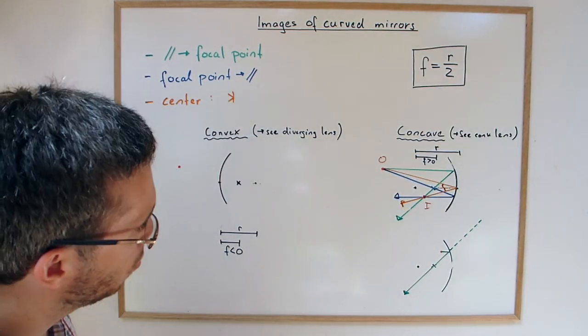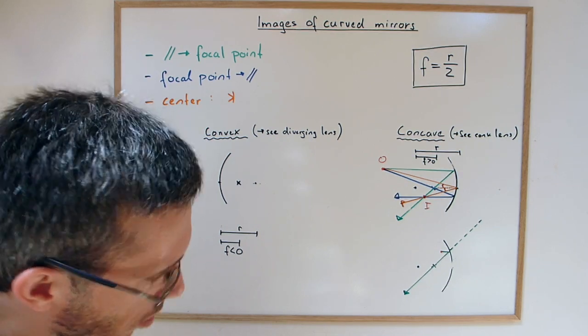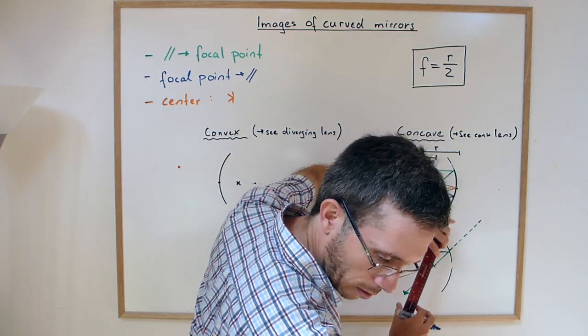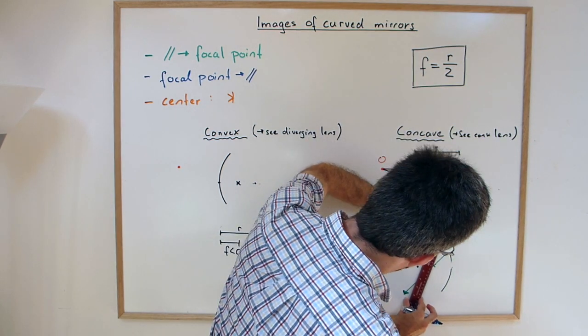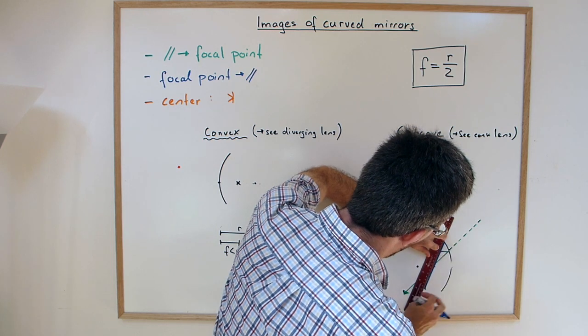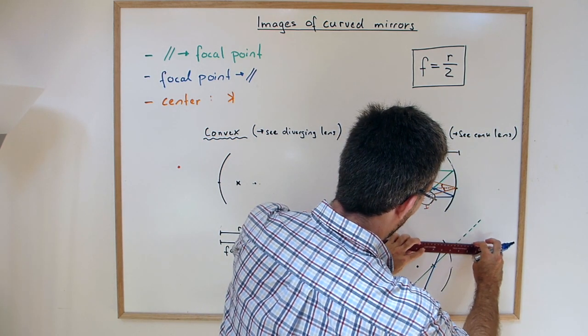Then I have the one that goes through the focal point will become parallel. So a line or ray that went through the focal point through my object will become parallel.